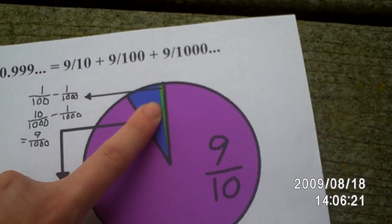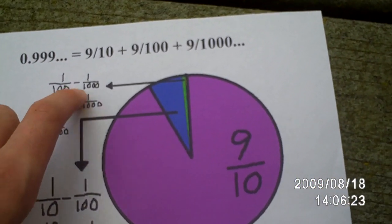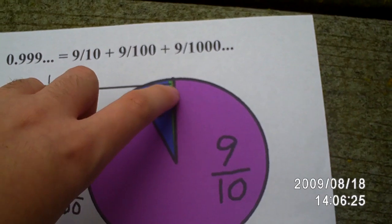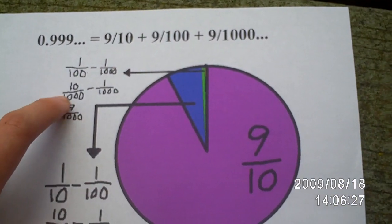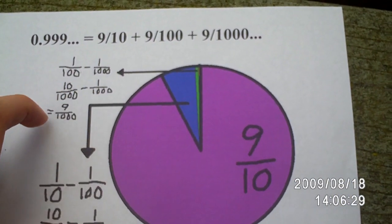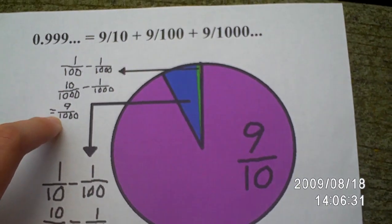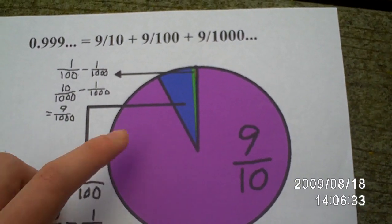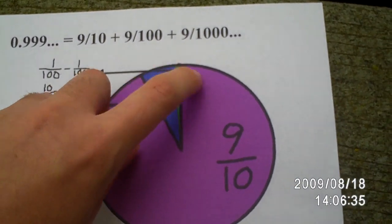And then what about this bit? You get one-hundredth minus one-thousandth, because of that other bit. And that's ten-thousandths minus one-thousandth, which would be nine-thousandths. So that's nine-tenths plus nine-hundredths plus nine-thousandths and so on, which still equals the whole pizza.